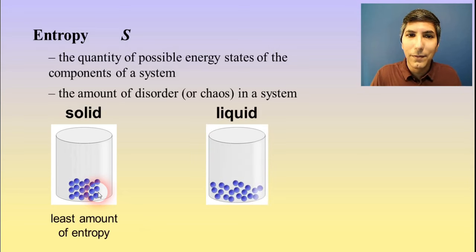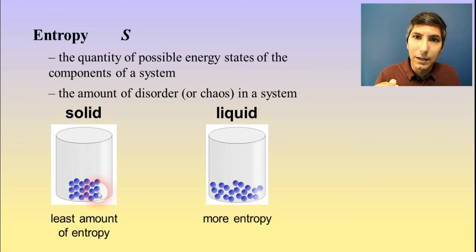Now, if you move up to a liquid, well, you know what a liquid is like. The molecules are a little bit farther apart. They have a little bit more freedom to move around. They can slip and slide around each other. And so in a liquid, there's more disorder. There are more possible energy states in those molecules. So we'd say that in a liquid, we have more entropy than we'd have in a solid. Solid is the least. Liquid is higher.